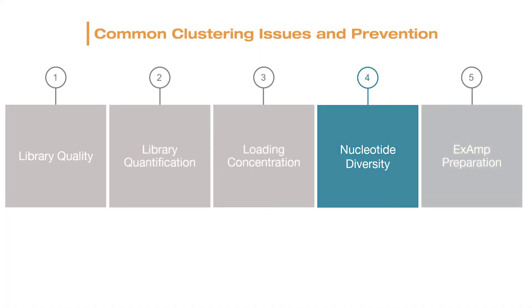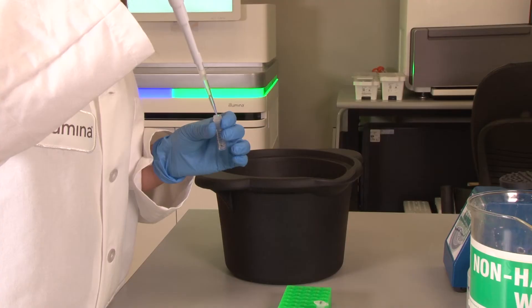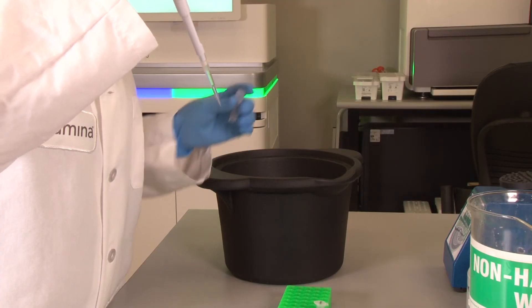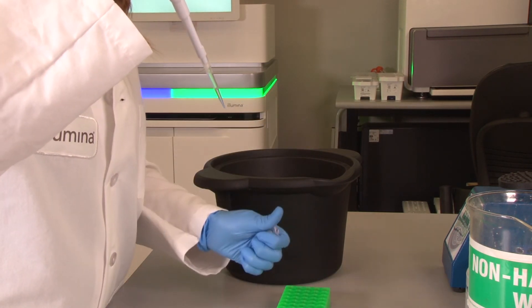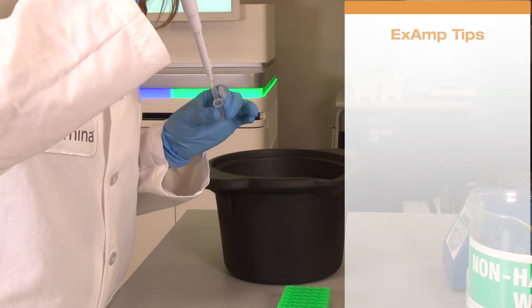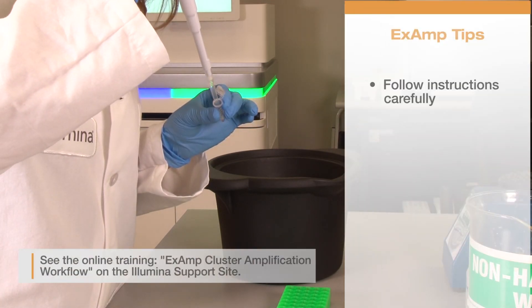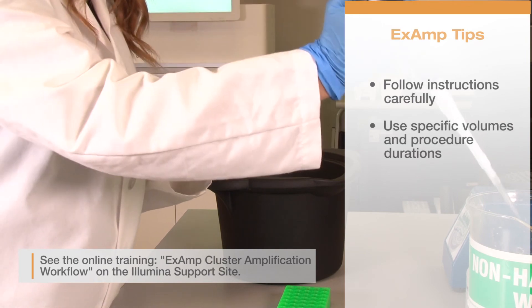Finally, let's see how ExAmp preparation can impact clustering. For workflows that require manually mixing exclusion amplification, or ExAmp, reagents, improper prep can impact clusters passing filter and other metrics like occupancy. Be sure to follow instructions for preparing ExAmp reagents carefully using specified volumes and durations. We hope this video contained helpful information about achieving optimal cluster density for your sequencing runs. For more on diagnosing suboptimal clustering issues in either patterned or non-patterned flow cells, check out the videos linked in the description. Thanks for being part of the Illumina community.